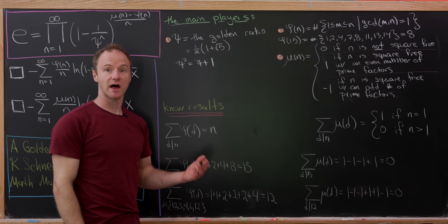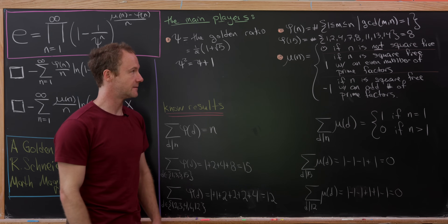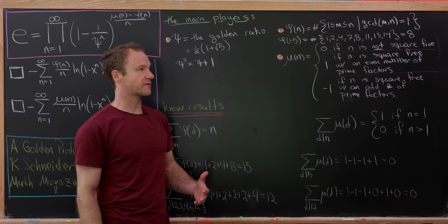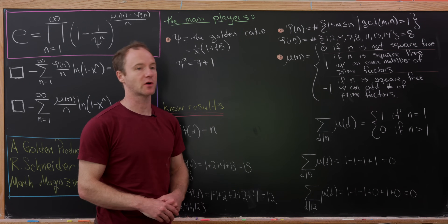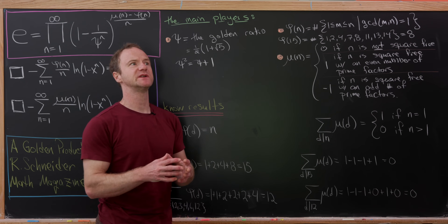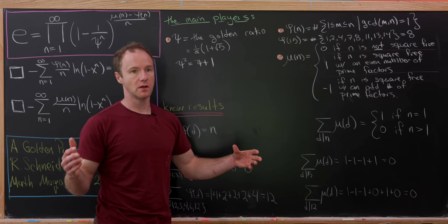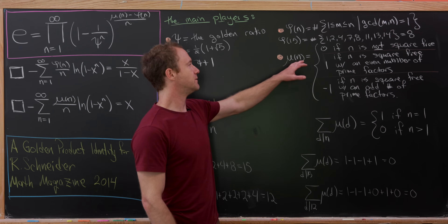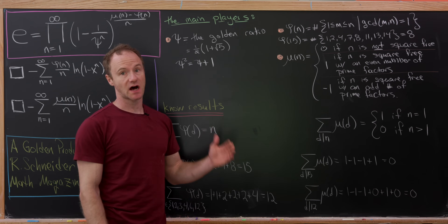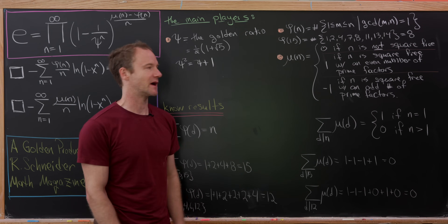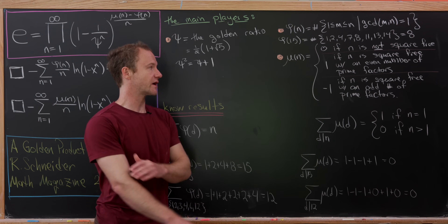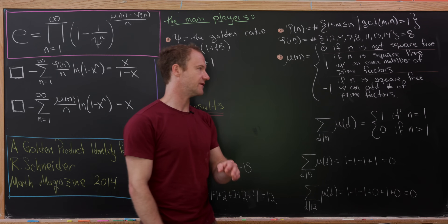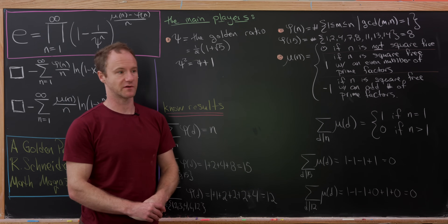Next we look at another arithmetic function, mu of n, which depends on a number being square-free or not. A number is square-free if it's not divisible by any perfect squares — equivalently all primes in its factorization have exponent 1. So mu of n equals 0 when n is not square-free, 1 if it is square-free with an even number of prime factors, and negative 1 if it is square-free with an odd number of prime factors.